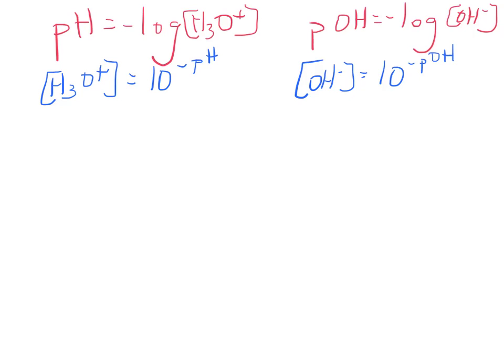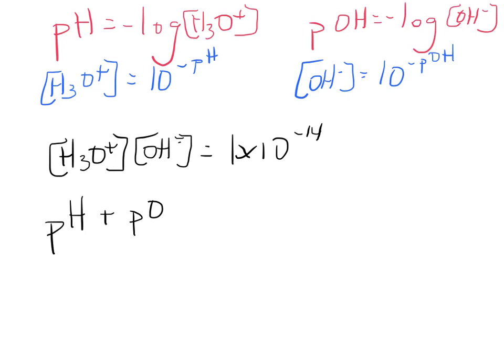Okay, and so how do H3O+ and OH- compare to each other? Remember that H3O+ and OH- multiply together to give 1 times 10^-14. That is the Kw of water, it was 1 times 10^-14. So then by taking the log of that, you end up with pH and pOH add up together to give you 14.